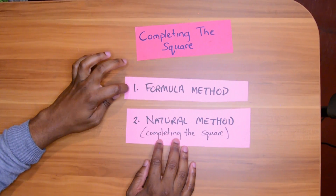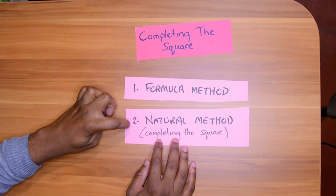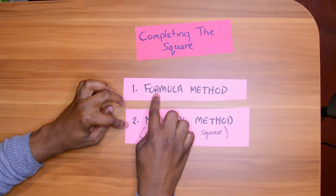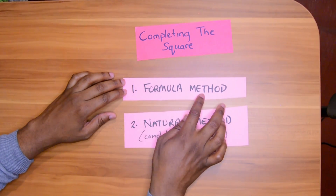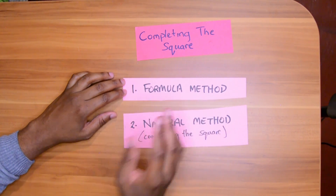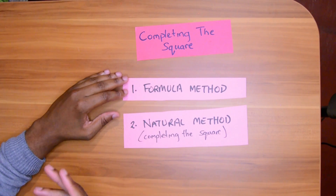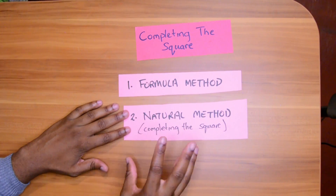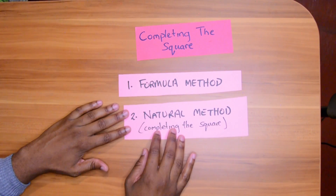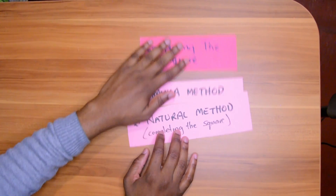The other methods are comparing coefficients and a hybrid method using the formula and natural methods together. I recommend that you learn the formula method just in case, because it's so easy. But you should try to actually complete the square properly, going through all the steps. You must be able to at least complete the square, because after completing the square you have to go on to solve a whole heap of further maths in the question.